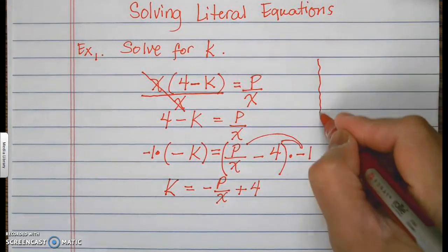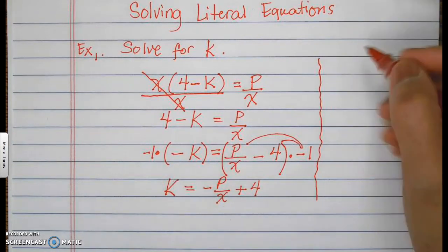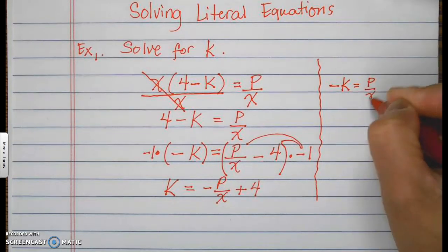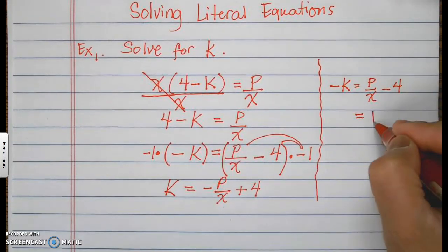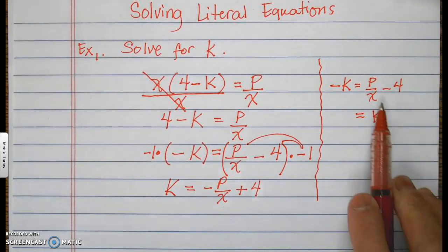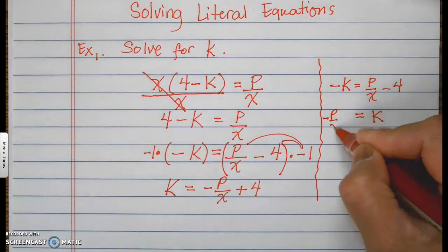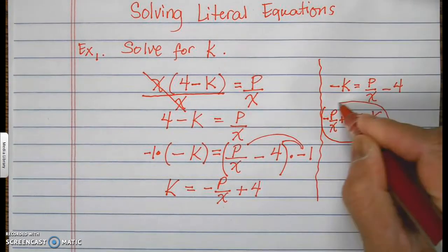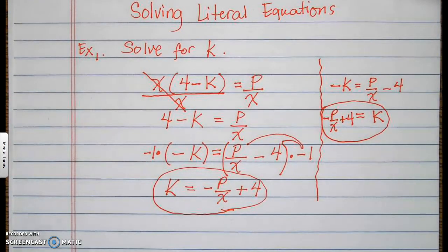There's another way to do it. Going back to negative k equals p over x minus 4, you can move the negative k to the other side, making it positive k. Both of the right-side terms go to the other side, giving negative p over x plus 4. Notice that this is the same result — both forms are accepted as correct answers.